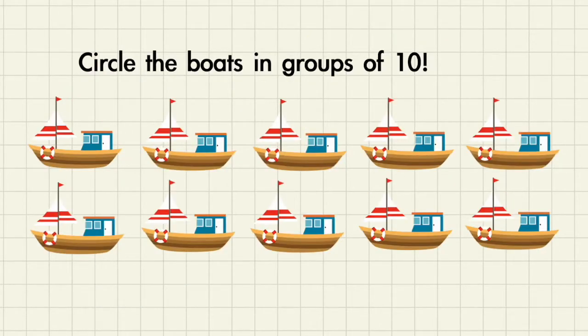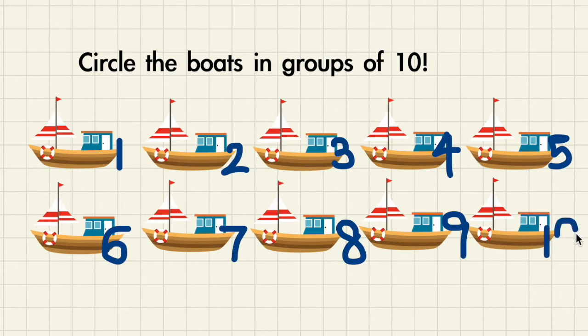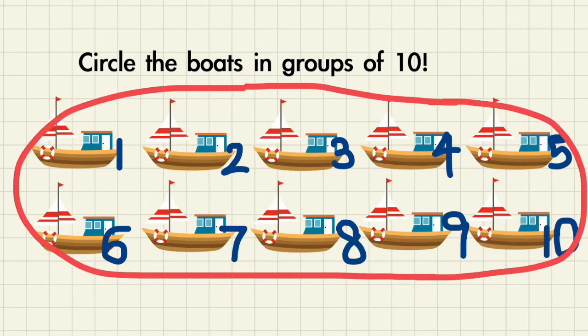Let's circle the boats in groups of 10. First, we have to count how many boats there are. Then we're going to circle every time we see 10 boats. Let's count together. 1, 2, 3, 4, 5, 6, 7, 8, 9, 10. So that will be one group because there are 10 boats. Let's circle that up where you can say that there is one group of 10.